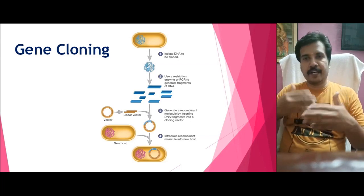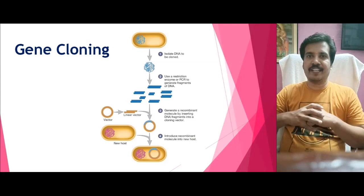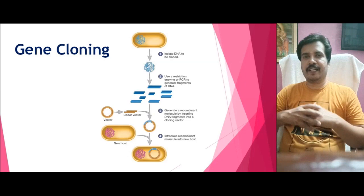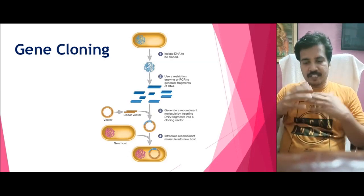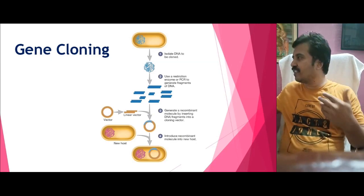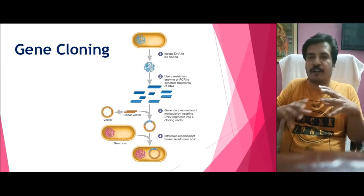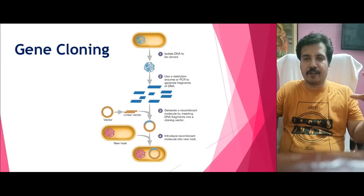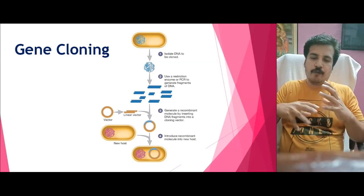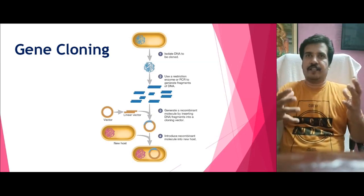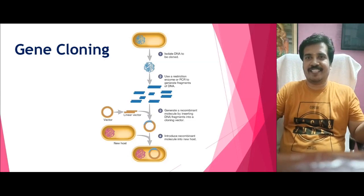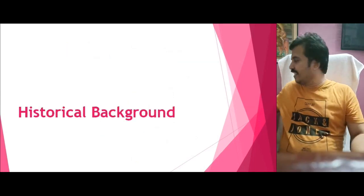This recombinant DNA is then made into multiple copies by insertion into a host cell, which may be bacteria, fungi, or any type of cell. This entire concept was developed by a group of scientists — mainly Paul Berg, Herbert Boyer, and Stanley Cohen — who made various innovative contributions to establish this technology as a separate branch of science.